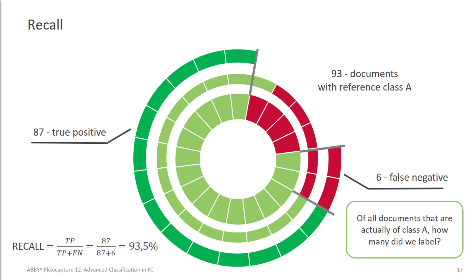Now let's consider recall. The third circle shows us how recall is counted. We take into account true positive results — documents that had to be classified as A and were classified correctly, indicated with dark green cells — and false negative results, documents that had to be classified as A but stayed unknown. Recall shows the percentage of documents that were really labeled as class A relative to the false negative results.